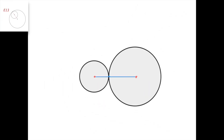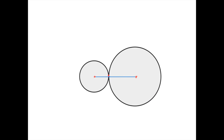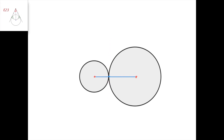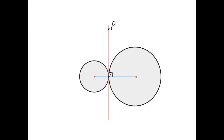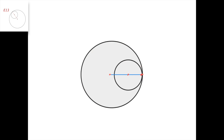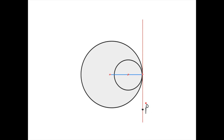The only circles without a radical axis are those that share a common center. For two circles that are externally tangent, the point of tangency lies on the line defined by the two centers, and since it lies on both circles it has power zero with respect to each. Therefore it lies on the radical axis. Since the radical axis is perpendicular to the line connecting the centers, the common tangent line at that point is the radical axis, meaning all points on this common tangent line have equal power with respect to both circles.